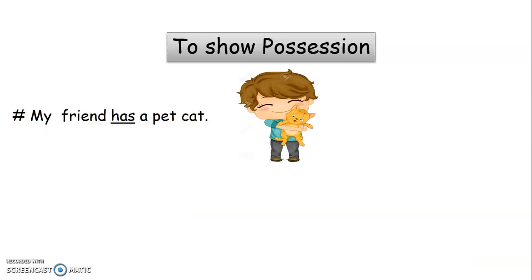First, to show possession — it indicates what a person possesses or has. For example, 'My friend has a pet cat.' Here, 'friend' is a singular noun, so we make use of the verb 'has'. Has shows what the friend possesses, that is a cat.